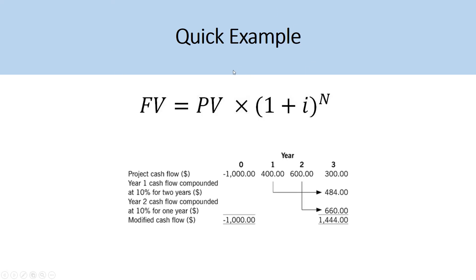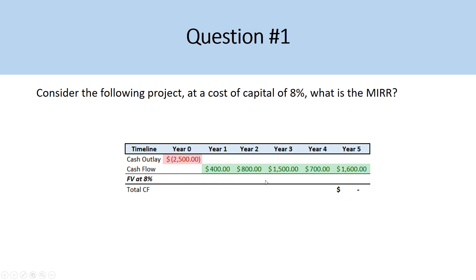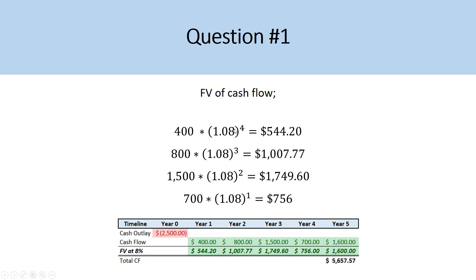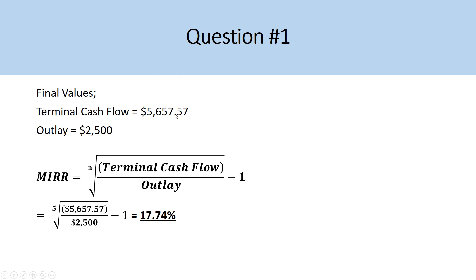We use our future value formula at a discount rate of 8% and project them out. So 400 × 1.08⁴ = $544, and 800 × 1.08³, getting closer to the end of the investment horizon as we lower the power. We compound and sum all cash inflows to get a total terminal cash flow in future value terms of $5,657.57. We then input that into the formula: terminal cash flow of $5,657 in the numerator, cash outlay of $2,500 in the denominator, root to the power of five for the five-year investment horizon, and subtract one to get a modified internal rate of return of 17.74%.